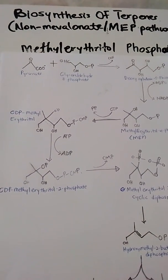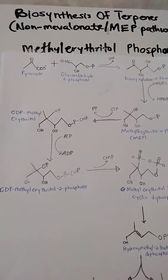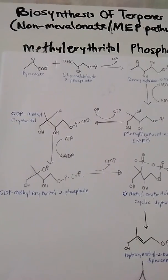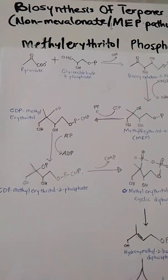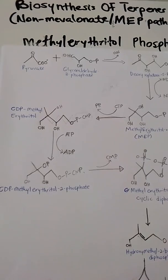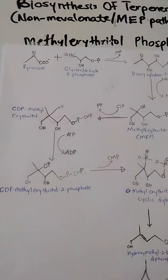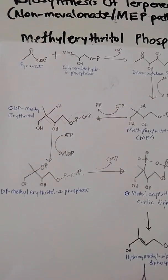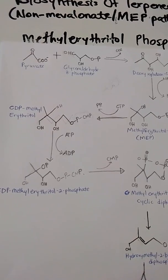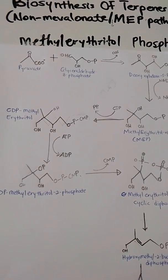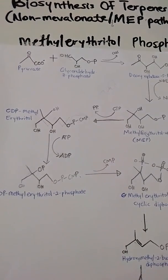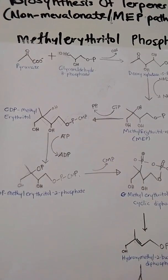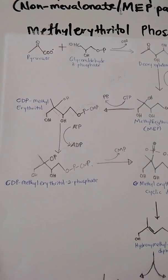Let's look at the non-mevalonic acid pathway for biosynthesis of terpenes. In the previous video we discussed the mevalonic acid pathway for biosynthesis of terpenes, where we established that three molecules of acetyl-CoA are used. The acetyl-CoA undergoes stepwise condensation to produce mevalonic acid, which then undergoes pyrophosphorylation, decarboxylation, and dehydration reactions to yield IPP and DMAPP — the precursors for biosynthesis of terpenes.